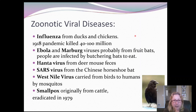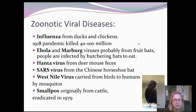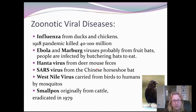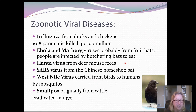A zoonotic disease is one that jumps the species barrier from an animal. Influenza is one that continues to do that, as it's a disease that also affects both domestic and wild birds, and domestic pigs are involved too. The 1918 pandemic is thought to have passed from birds to pigs to humans. Ebola and Marburg are probably from fruit bats, though it has been extremely frustrating to scientists that they still have not identified for sure the wild source of this virus.